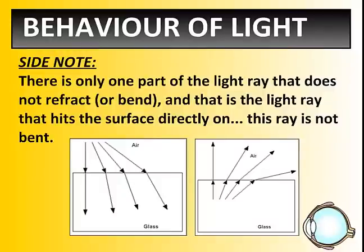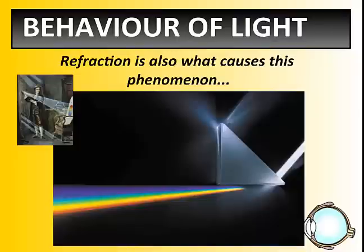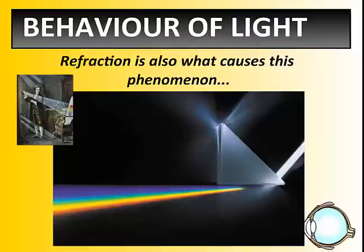The property of refraction is actually what Sir Isaac Newton observed when he saw his beautiful rainbow. When light passes through a prism — a solid glass prism — the density of the glass is different from the density of air. The glass is more dense, and because it's more dense, the light is spread out and refracted. When white light spreads out or refracts, it generates a rainbow.